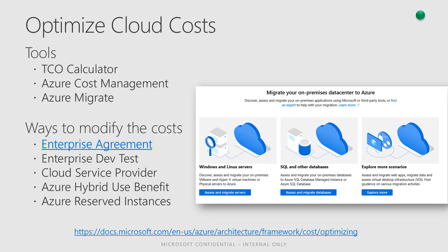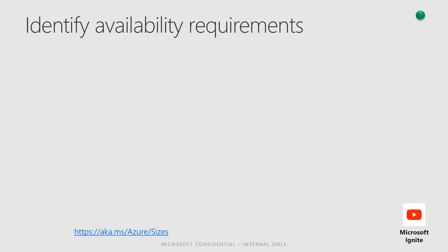The Azure Hybrid Benefit is a pricing benefit for customers who have licenses with Software Assurance, which helps maximize the value of existing on-premises Windows Server and/or SQL Server license investments when migrating to Azure. Eligible customers can save up to 40% on Azure Virtual Machines (IaaS) and save up to 55% on Azure SQL Database (PaaS) and SQL Server on Azure Virtual Machines (IaaS). With Azure Hybrid Benefit combined with Azure Reserved Instances, savings increase to up to 80%. Azure Reserved Instances can be assigned at the enrollment or the subscription level.